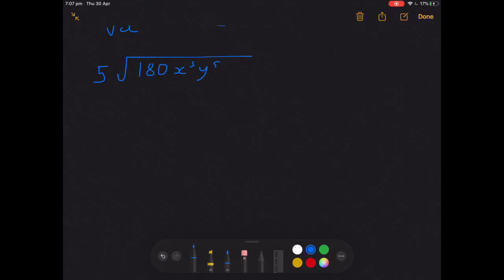So we're going to split this up: 5 times root 180 times root x cubed times y to the 5th, and deal with each piece individually. You can do your simplification stuff to come to the conclusion that root 180 is 6 root 5. For tips on how to do that, refer back to a previous video.